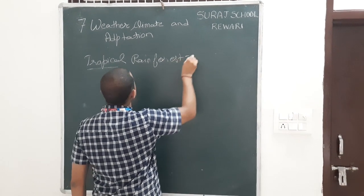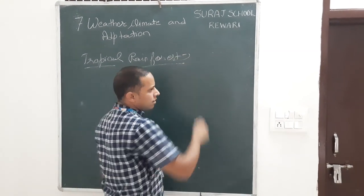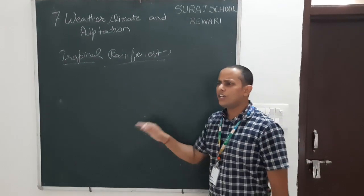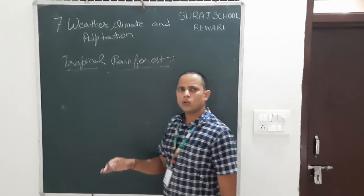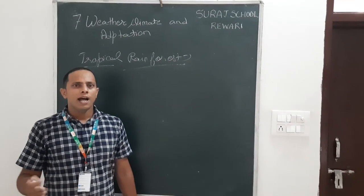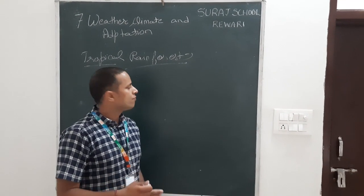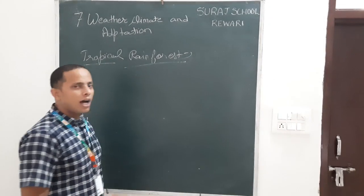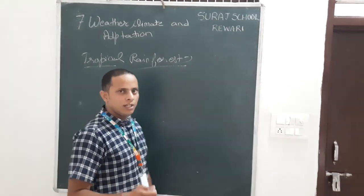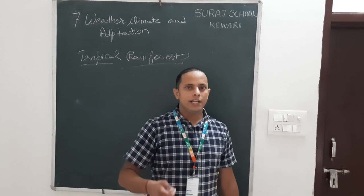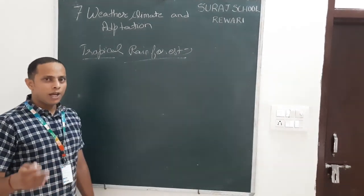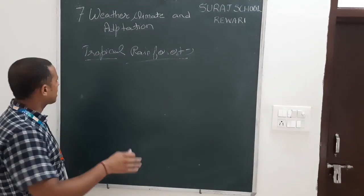Tropical rainforest is a climate that is near to the equator or some distance from the equator. They have hot temperature and heavy rainfall. So they have a large number of plants. As the number of plants increase, the number of animals also gets increased.